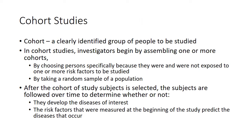To establish a stronger causal relationship we can use cohort and case-control studies. A cohort is a clearly identified group of people that we want to study. Investigators assemble one or more cohorts by choosing people specifically because they were exposed to one or more risk factors — for example, one group of smokers and one group of non-smokers — or by taking a random sample of the population. The cohort is then followed over time to determine whether the risk factors measured at the beginning predict whether disease actually occurs.